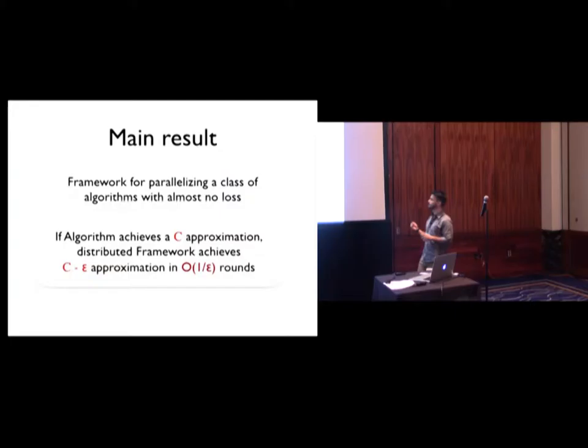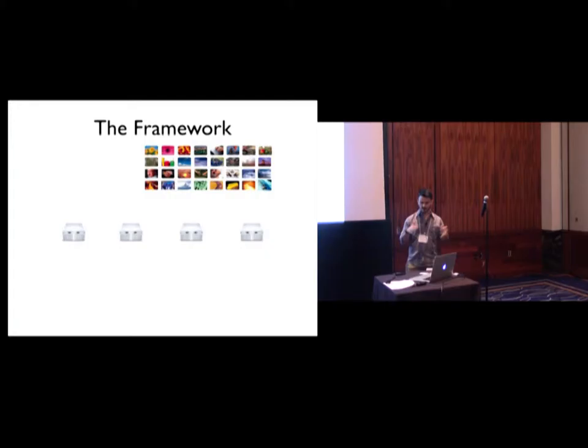The main result we've obtained is a framework for parallelizing a class of algorithms, which I'm going to talk about in a minute, with almost no loss. More formally, if an algorithm in this class achieves a C approximation, then this distributed framework achieves a C minus epsilon approximation in O of 1 over epsilon rounds.